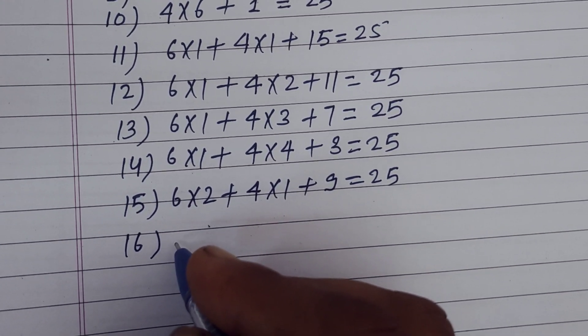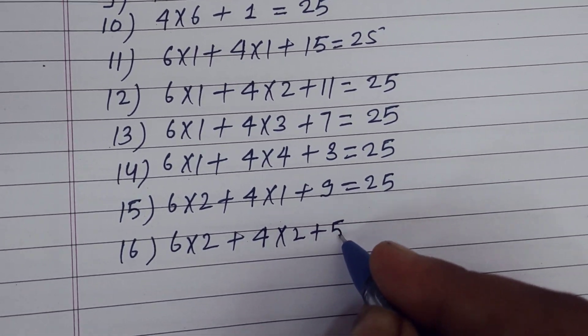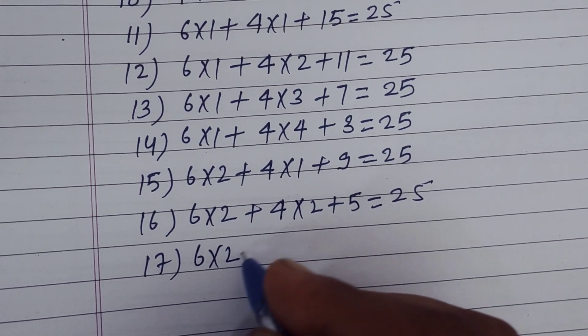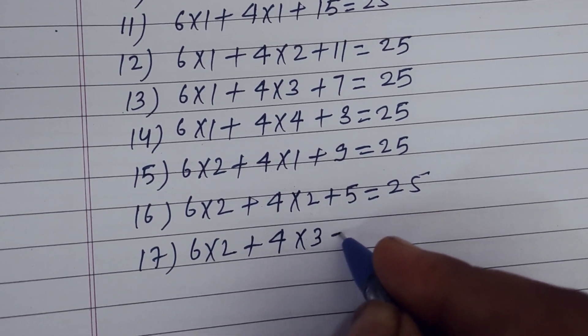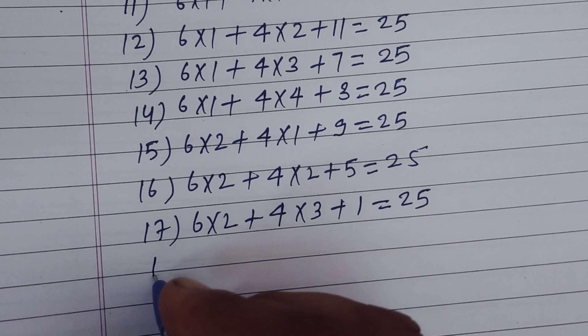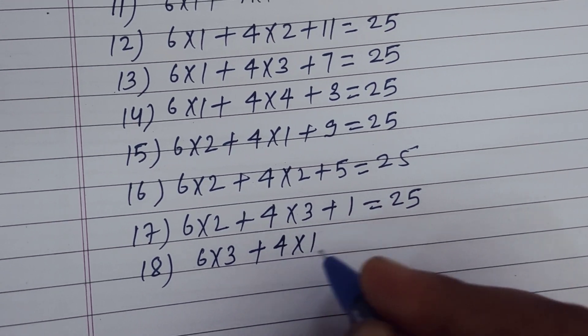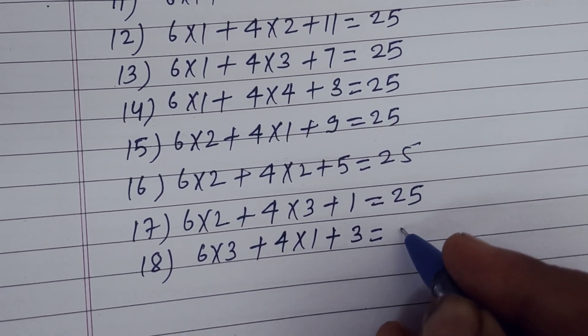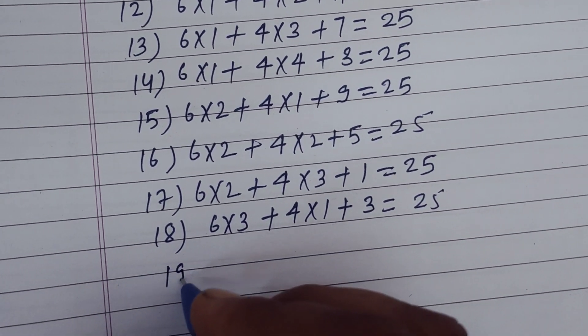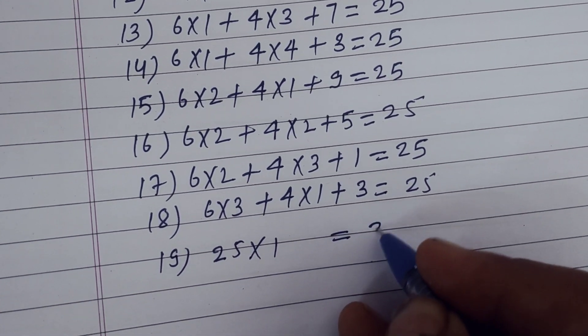16th condition is 6×2, 4×2 plus 5, this is also 25. 17th condition is 6×2, 4×3 and 1 single, this is also 25. 18th condition is 6×3, 4×1 plus 3 equal to 25. And 19th condition which is the last condition, 25×1 equal to 25.